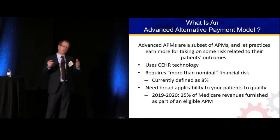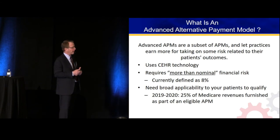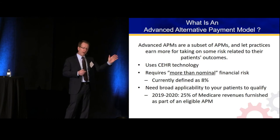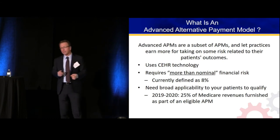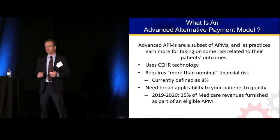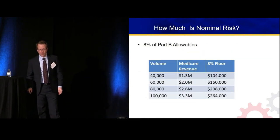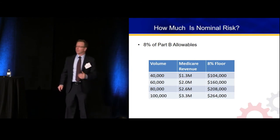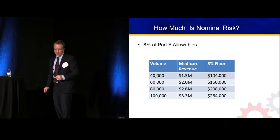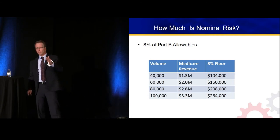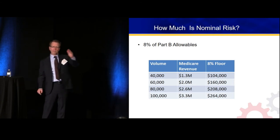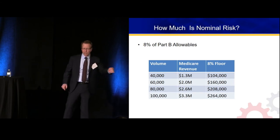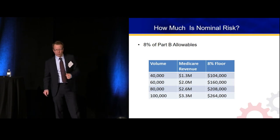That requires a pretty robust infrastructure within the group — a single hospital community democratic group would have a hard time with this. Nominal risk to qualify is 8% and 25%: one out of four of your Medicare patients need to be in the advanced alternative payment model, and you need to be at risk for 8% of Part B allowables.